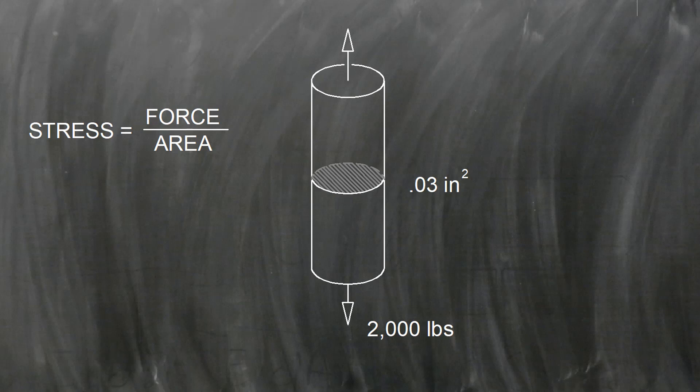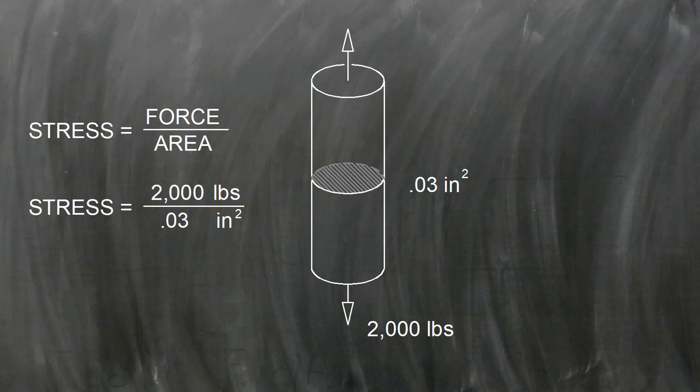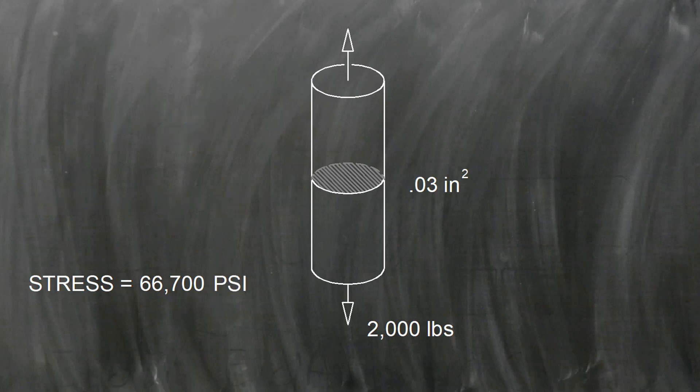In our example, the load was 2,000 pounds, and the area was about 0.03 square inches. In this case, the stress is 2,000 pounds divided by 0.03 square inches, which is about 66,000 pounds per square inch. The units of stress are pounds per square inch.